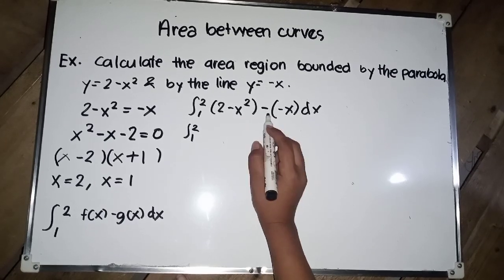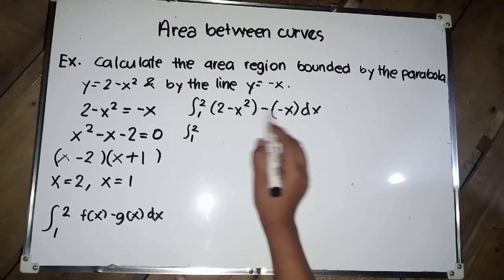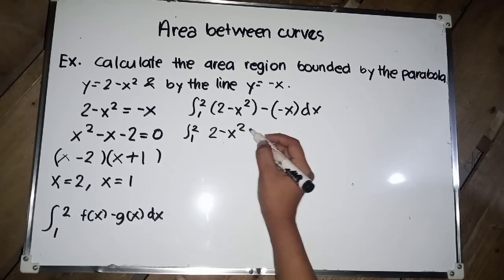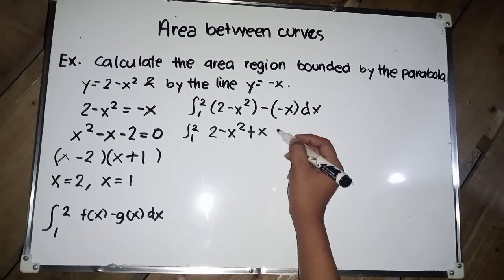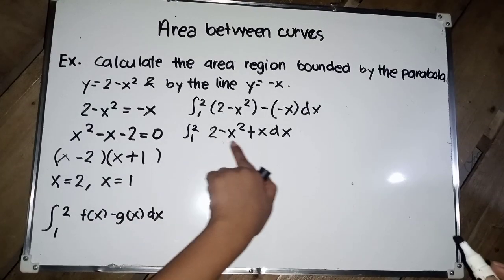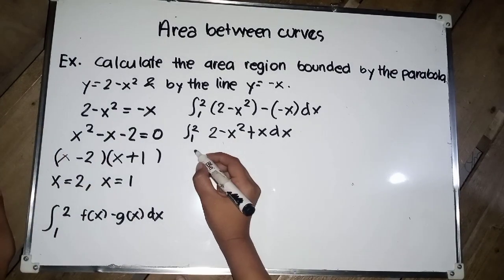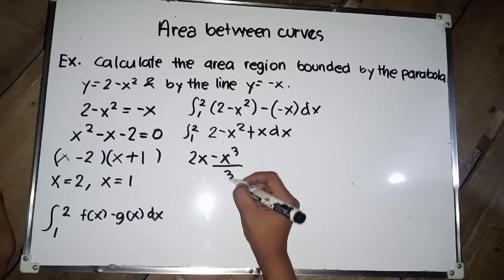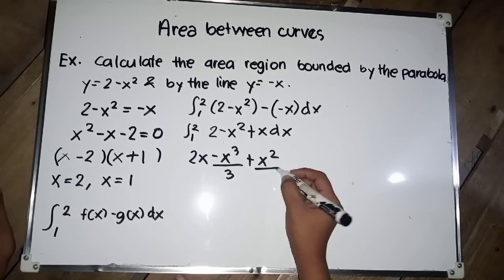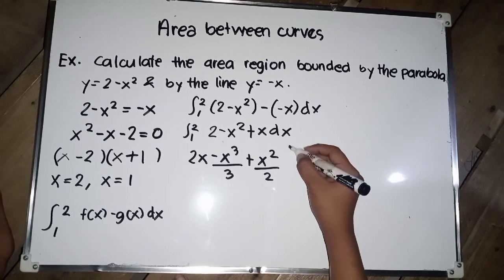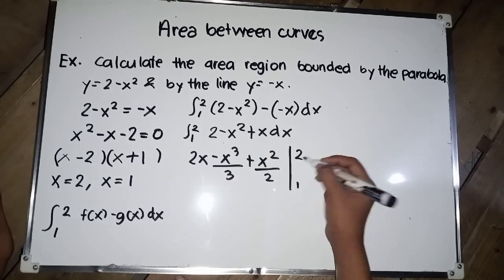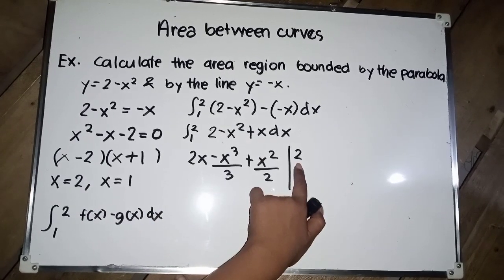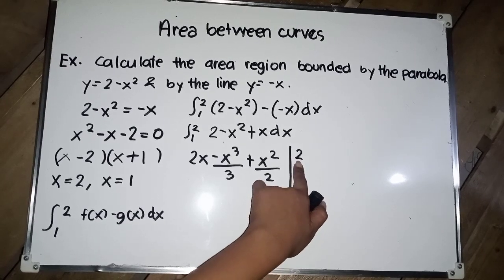We evaluate the integral from negative 1 to 2. Distributing the negative sign gives us 2 minus x squared plus x dx. Integrating, we get 2x minus x cubed over 3 plus x squared over 2, evaluated from 1 to 2.